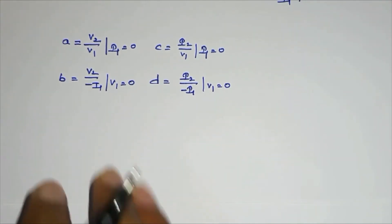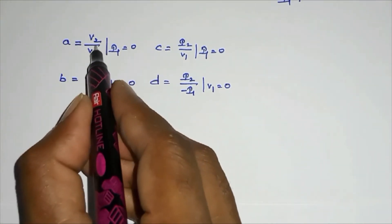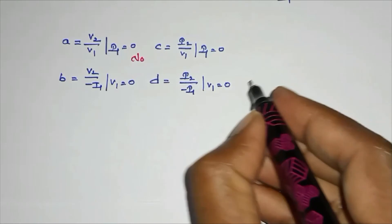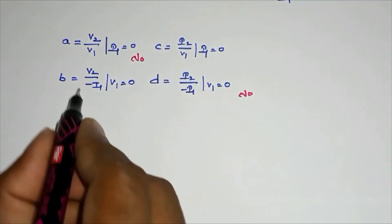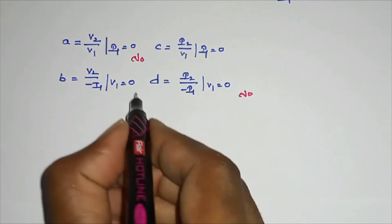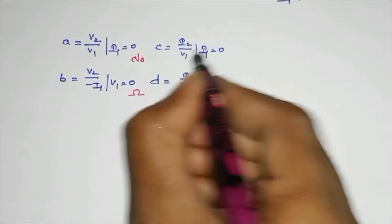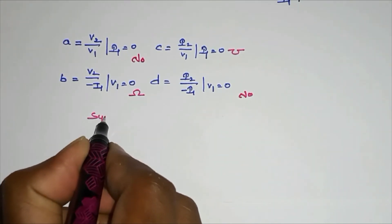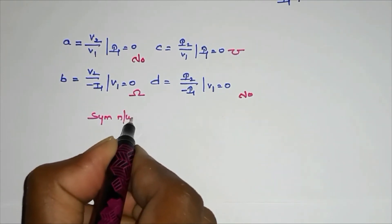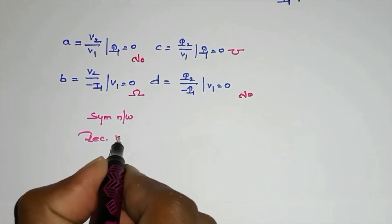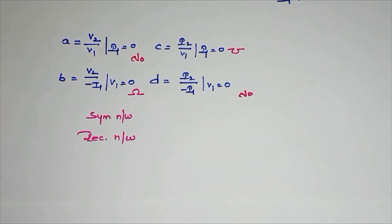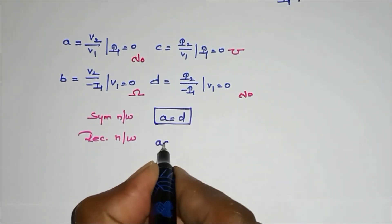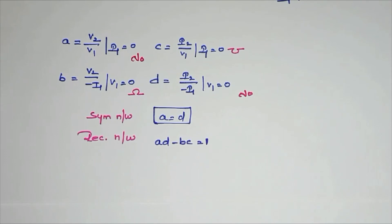Here a equal to v2 by v1 — volt over volt, so no units. Here b equal to v2 by i1 — volt per ampere units. For a symmetrical network as well as reciprocal network, a equal to d. And for a reciprocal network, ad minus bc equal to 1.